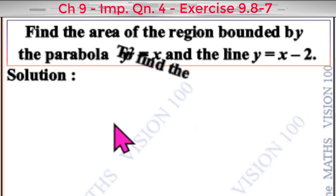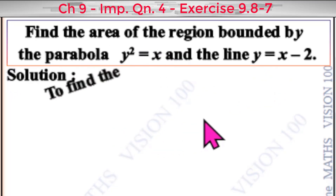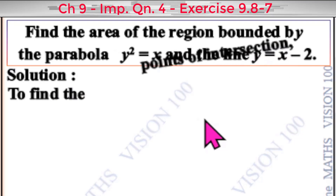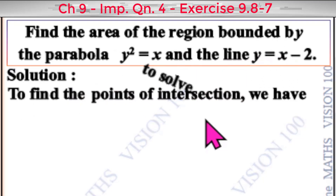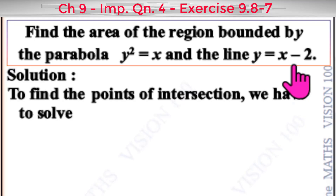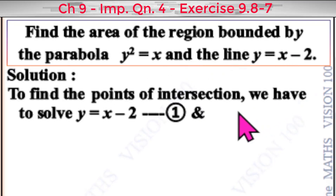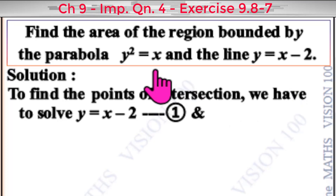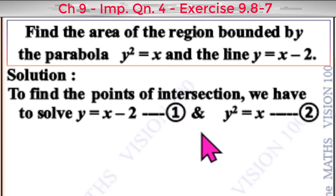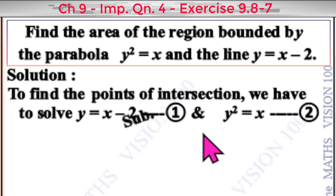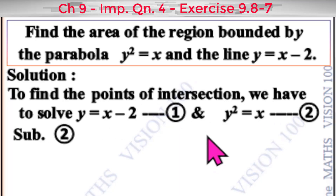Now to find the point of intersection, we have to solve: y is equal to x minus 2, which is the first equation, and y squared is equal to x, which is the second equation. Substitute the second equation into the first equation.